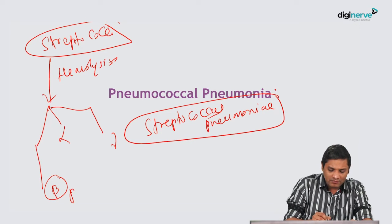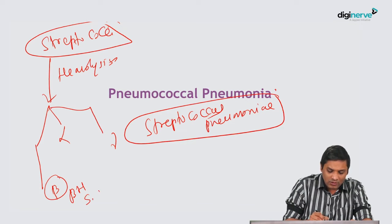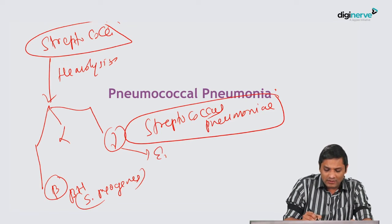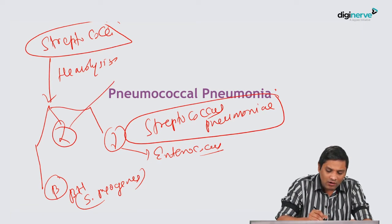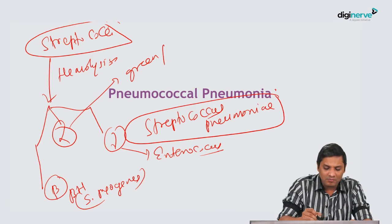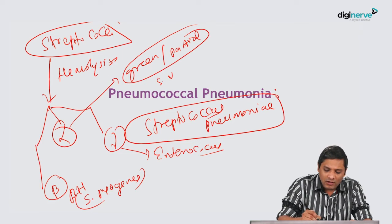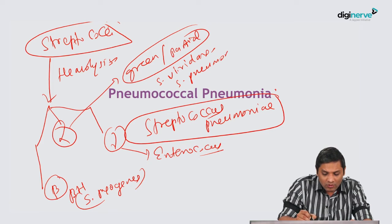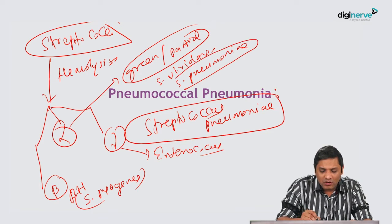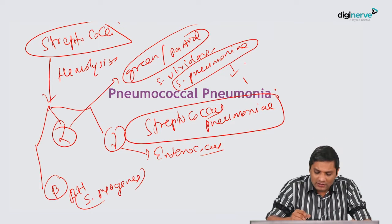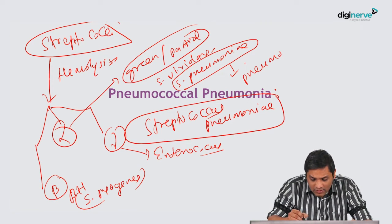Beta hemolysis examples include Streptococcus pyogenes. Gamma hemolysis classical example is Enterococcus. Alpha hemolysis, also called greenness or partial hemolysis, characteristic examples include Streptococcus viridans and today's topic Streptococcus pneumoniae, which is also commonly called pneumococcus.